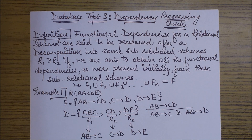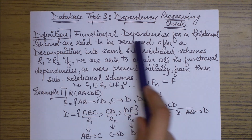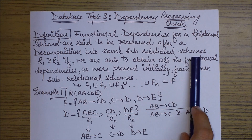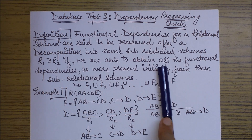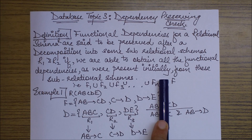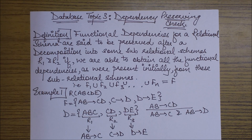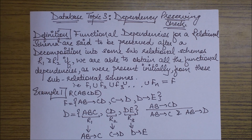Let's first read the definition. It states that functional dependencies for relational schema R are said to be preserved after a decomposition into sub-relational schemas R1 and R2 if we are able to obtain all the functional dependencies present initially from these sub-relational schemas. If I had three functional dependencies in the beginning represented as set F before the decomposition, I should be able to obtain all those three functional dependencies after the decomposition as well. If I am able to get those same functional dependencies, it is a dependency preserving decomposition; otherwise it is not.